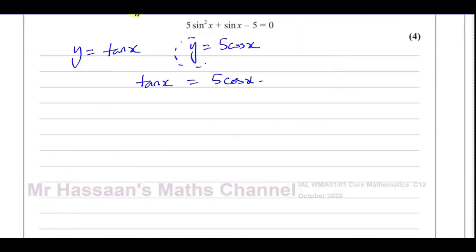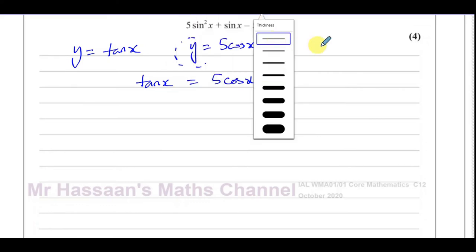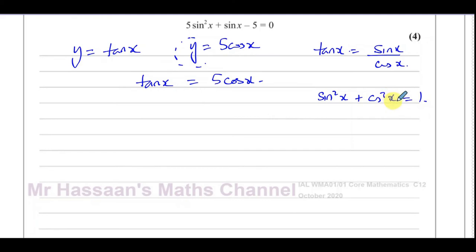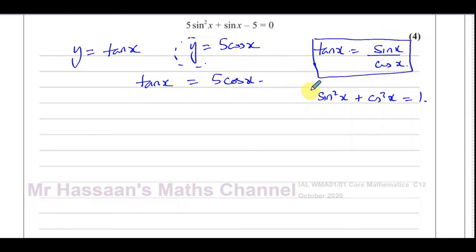The two identities we learn in P2 are: first, tan x = sin x / cos x, and second, sin²x + cos²x = 1. So the sine squared of an angle plus the cosine squared of the same angle equals 1, and the tan of an angle equals the sine of that angle over the cosine. These are very important identities, not only in P2, but also in P3, P4, and other units.